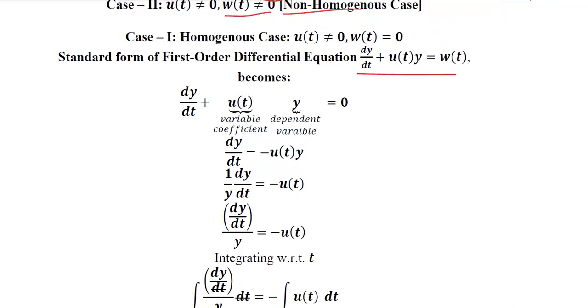This is the primary standard form in which, as per the case of homogeneous differential equation, the right-hand side will be equal to 0, that is w(t) will be equal to 0. When we substitute this value, the remaining expression will be this. Just to remind ourselves, this is the variable coefficient and this is the dependent variable.